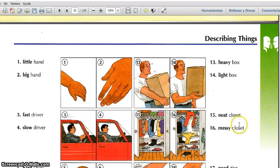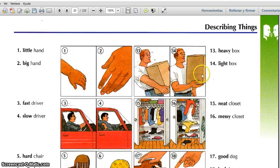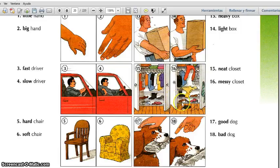Let's go with the other set of pictures. Thirteen: heavy box. Heavy. Light box. Light. Neat closet. Neat. Messy closet. Messy.